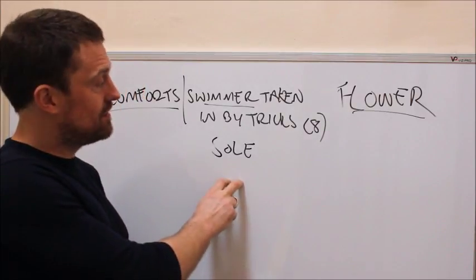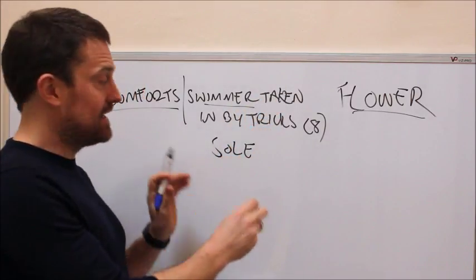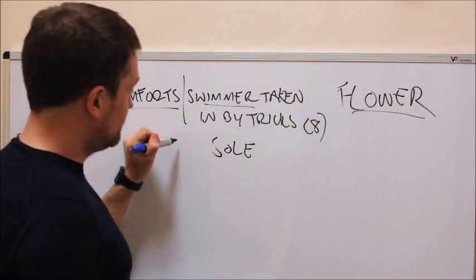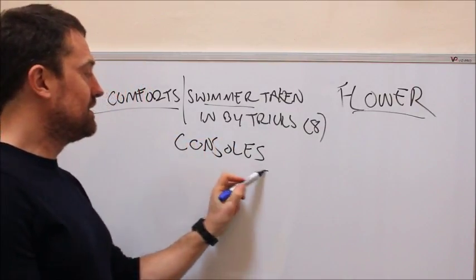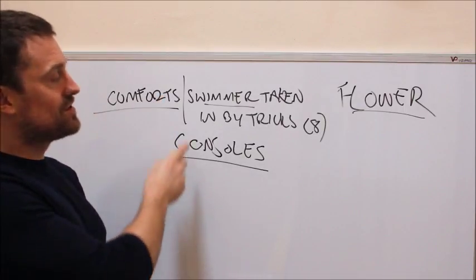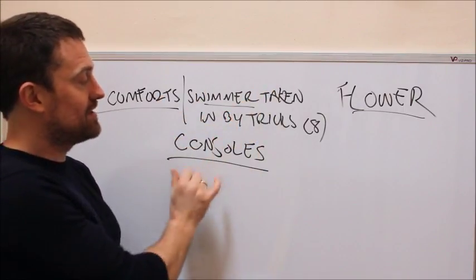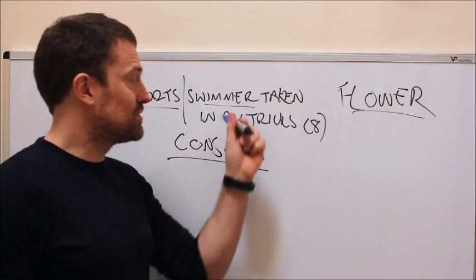So the fish is the sole, it's taken in by—meaning it's within—the word for tricks: cons. You con someone. Consoles—comforts. So swimmer (sole) taken in by tricks (cons) gives comforts (consoles).